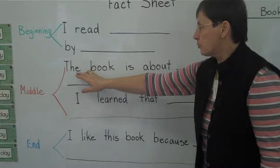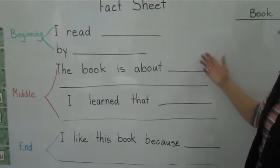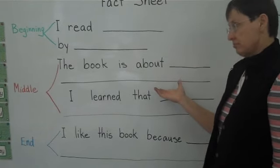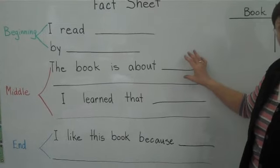You would tell your readers what the book is about. Is it about space, animals, rivers, oceans, machines? You would write that.